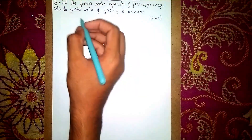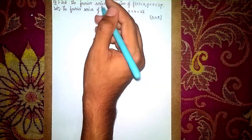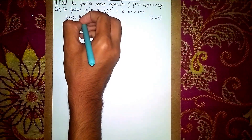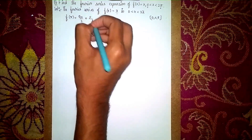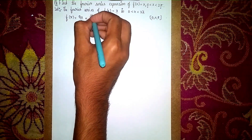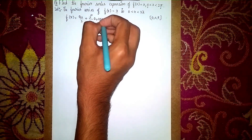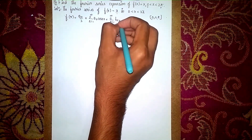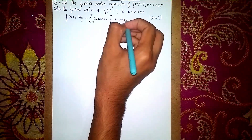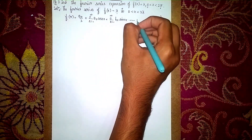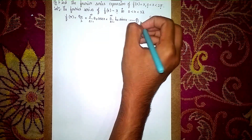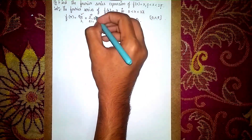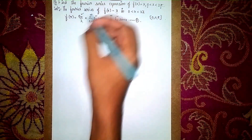Now, you always have to be aware of this equation. The Fourier series of f(x) is equal to a₀/2 plus summation from n=1 to infinity of aₙ cos(nx), plus summation from n=1 to infinity of bₙ sin(nx). Take this as equation one. We will use this equation generally, and afterwards we have to find first a₀, then aₙ, then bₙ.